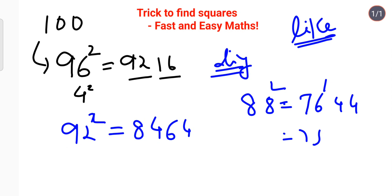So 88 squared is 7744. Now you might be wondering whether this trick is applicable for numbers greater than 100. Let's look at that as well.